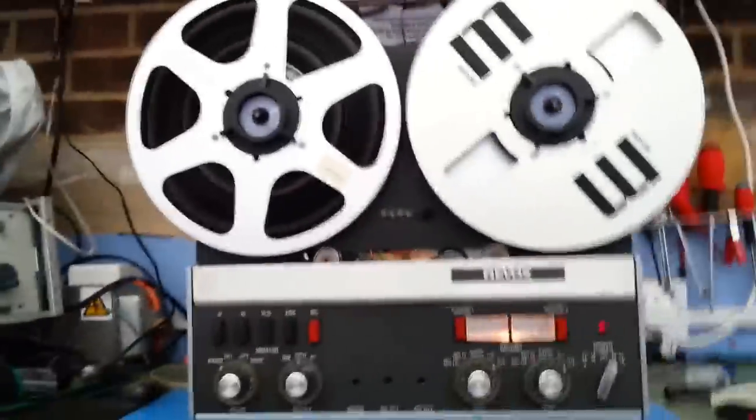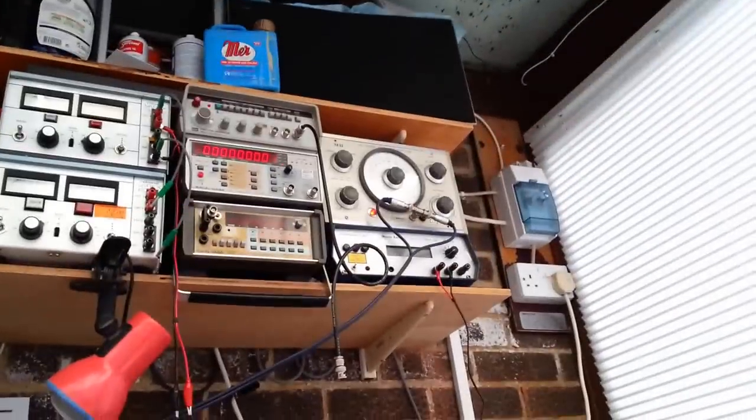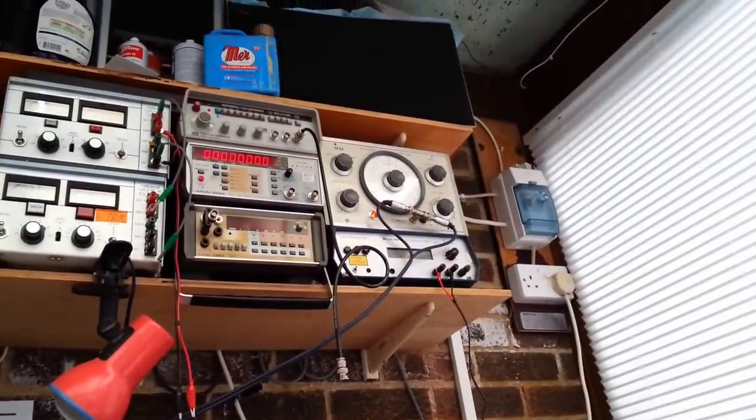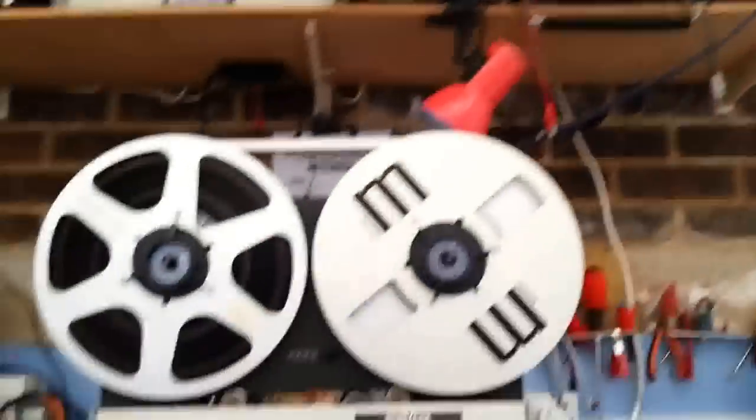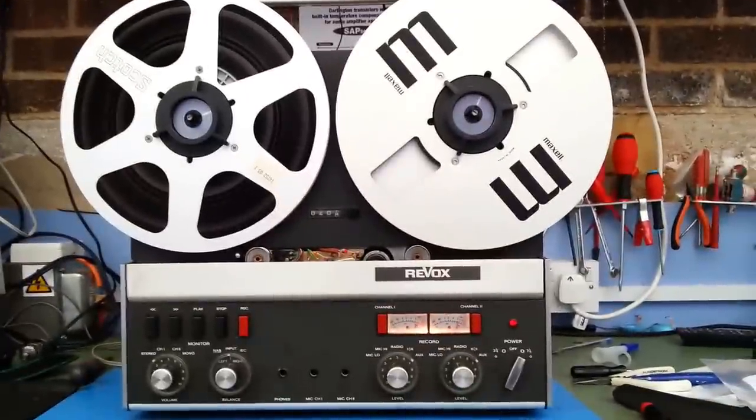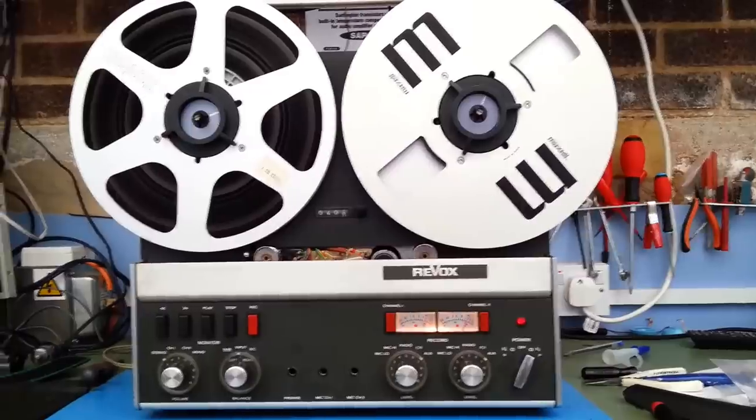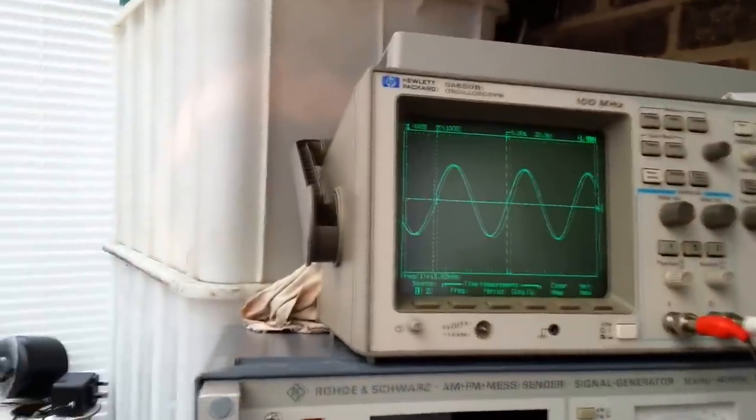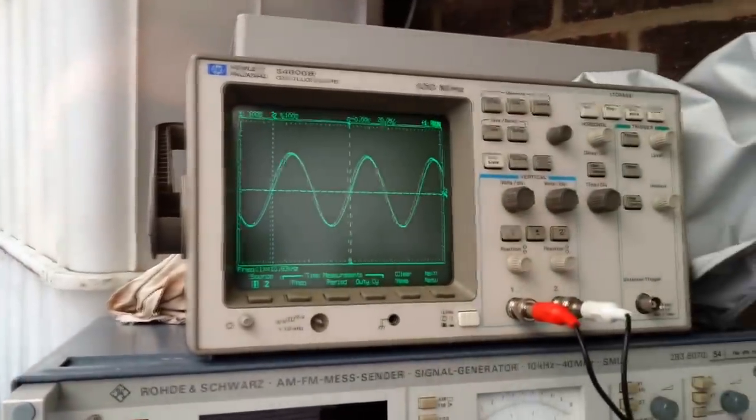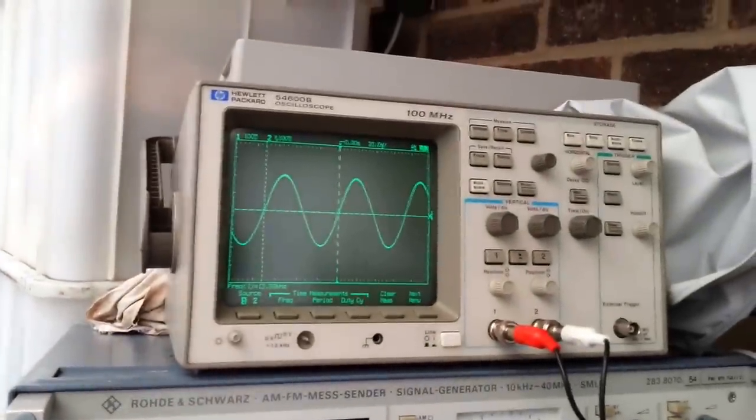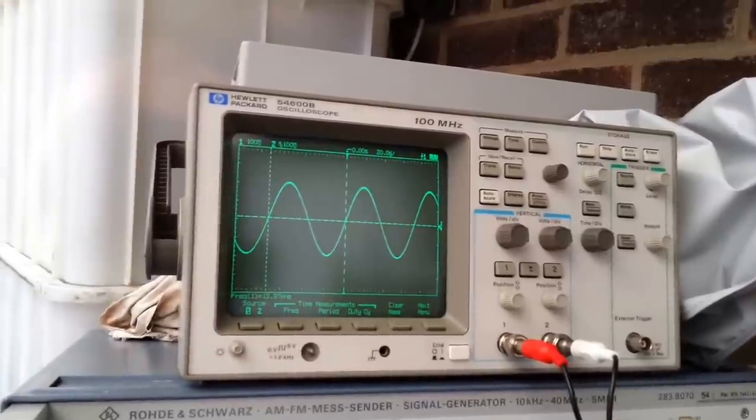As you can see the Revox is set up. I've got a signal from the AF signal generator feeding into the inputs of the machine. I've set it at 0 dB on the meters. And on the scope here you see this is the output of the reproduction amplifier. It's looking at the inputs at the moment.